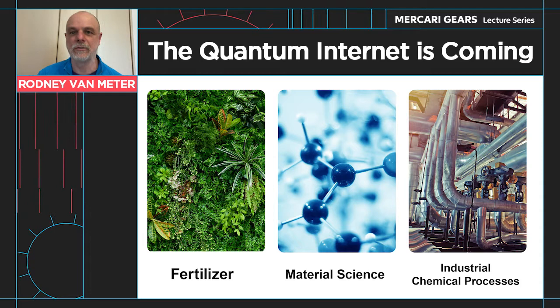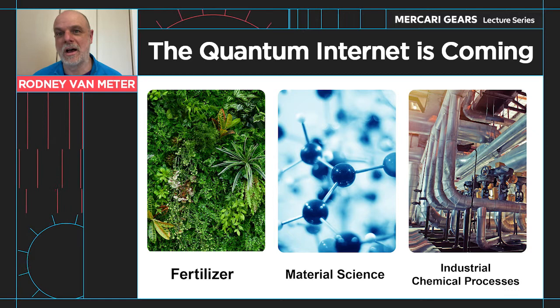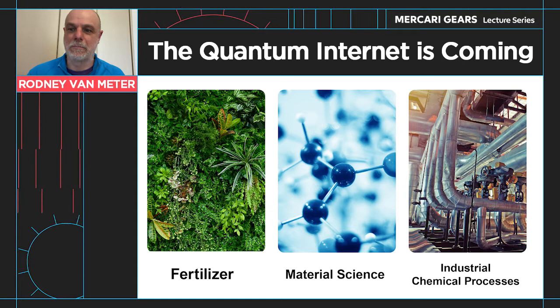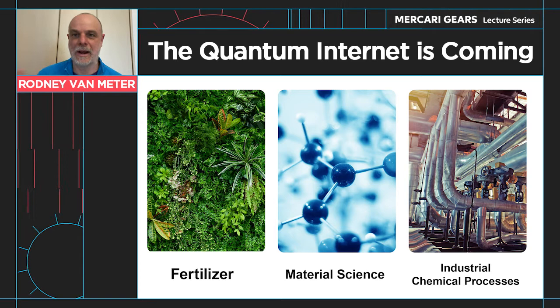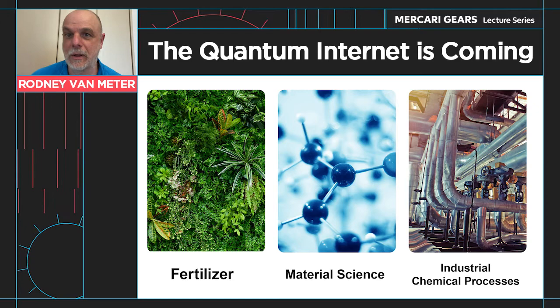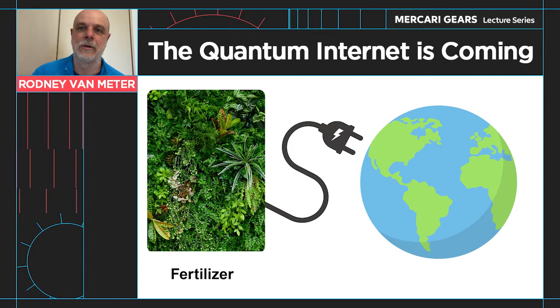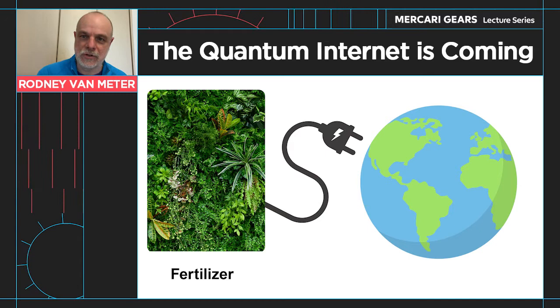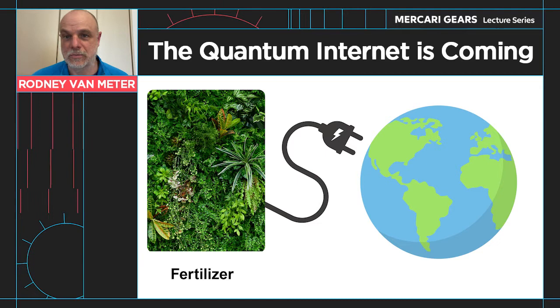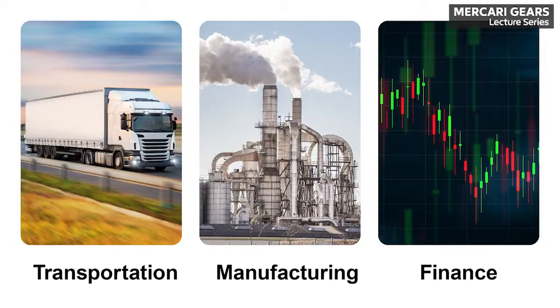Those quantum chemistry problems range from fertilizer to material science to industrial chemical processes of different kinds. The president of Microsoft, for example, is fond of suggesting that quantum computers will help us improve the efficiency of manufacturing agricultural fertilizer. That might not sound like a big deal, but there are parts of the process that are not well understood and that consume a tremendous amount of energy. This is how quantum computers are going to make the world a better place.